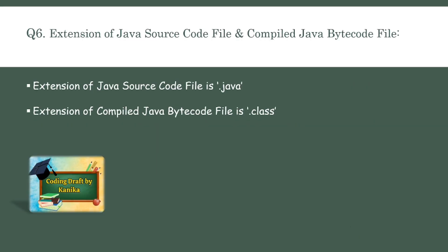What is the extension of a Java source code file and a compiled Java bytecode file? The extension of a Java source code file is .java, and the extension of a compiled Java bytecode file is .class.